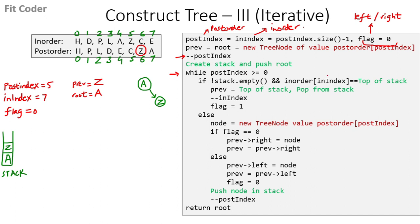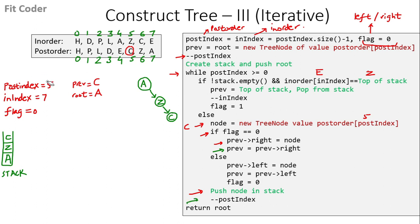In the next iteration, we compare top of the stack (Z) to the inorder index (E) — not equal, so we come in the else part. We create a new tree node with the fifth index of the postorder traversal, which is C. Flag is 0 and previous is Z, so right of Z is now C, and previous becomes C. We push C and decrement postindex to 4. In the following iteration, top of the stack is C, inorder index is still E — not equal. We create a new tree node with the fourth postorder index, which is E. Flag is 0, so right of C becomes E, previous becomes E. We push E and decrement postindex to 3.